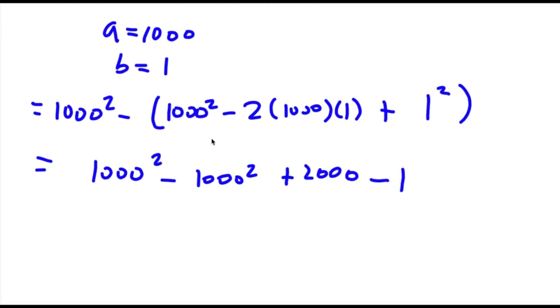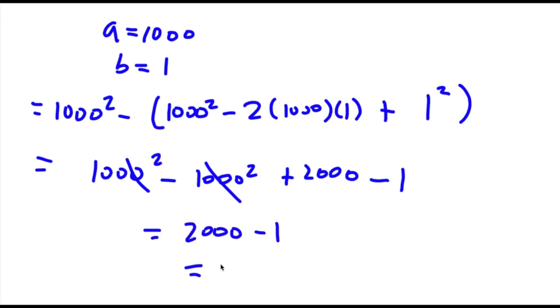Now, 1000 squared and 1000 squared — these two will cancel out. So all I'm left with is 2000 minus 1, which is equal to 1,999.